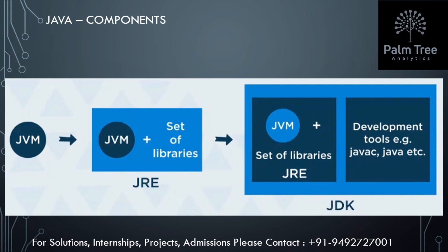JVM is an abstract machine. It does not exist physically. It is a specification that provides a Java environment in which Java bytecode can be executed. Java Virtual Machine performs the following: it loads the code, verifies the code, executes the code, and provides the runtime environment.